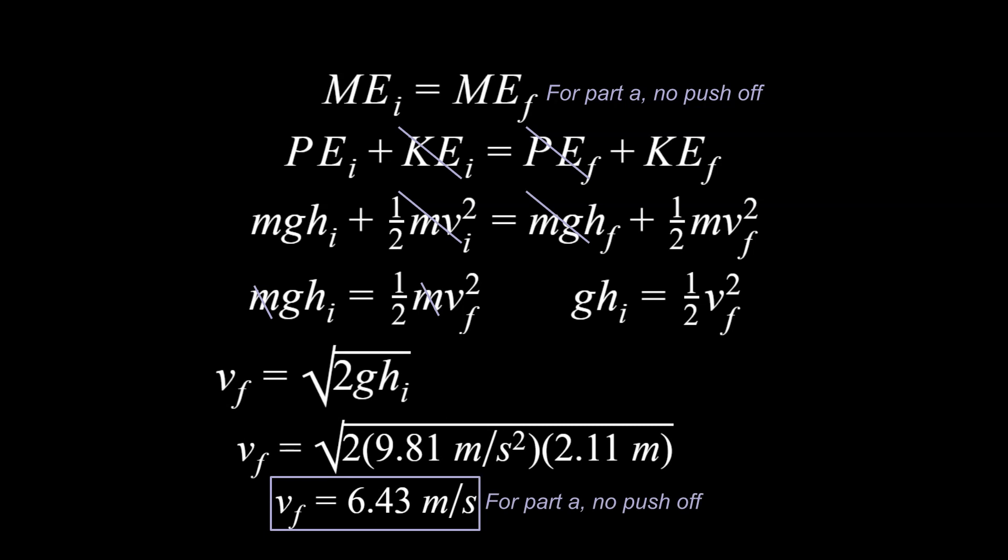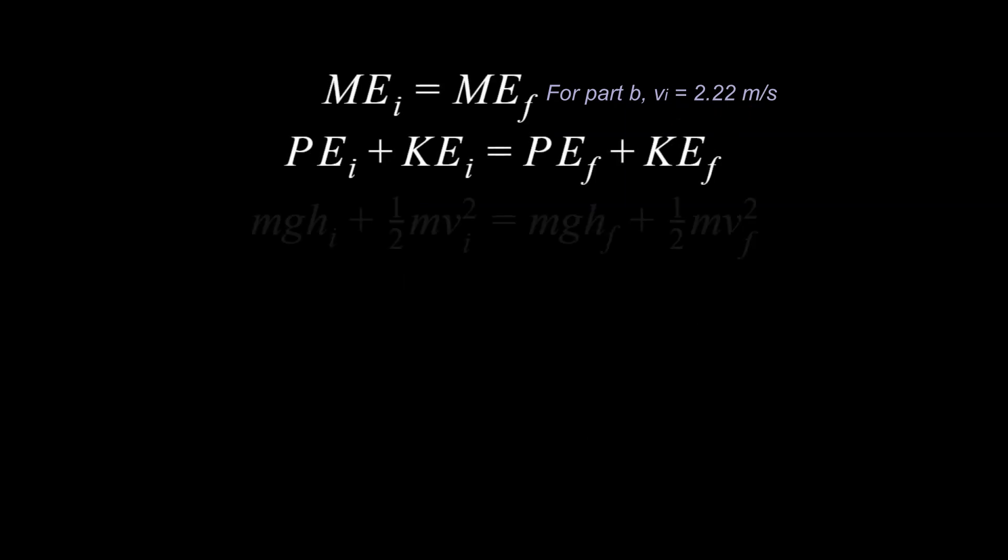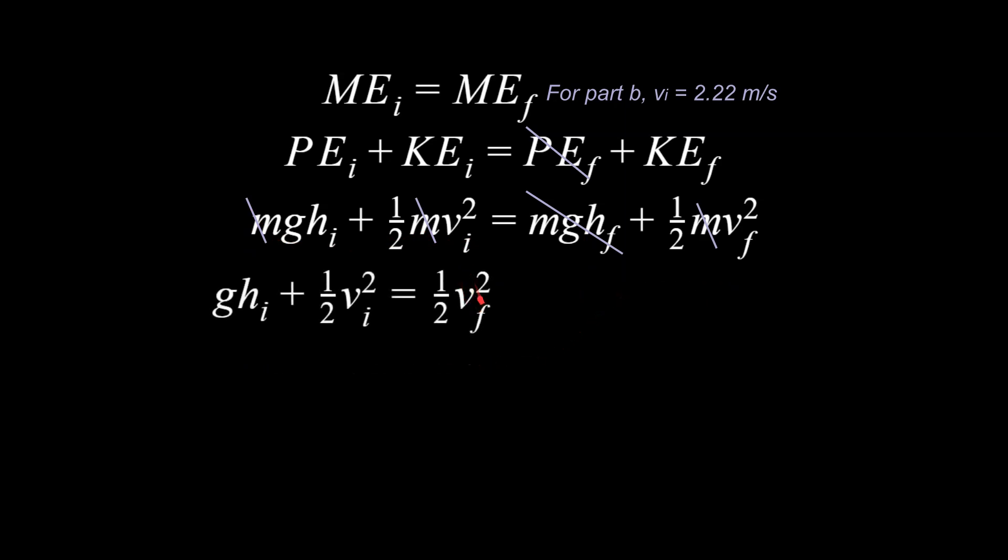Now remember for part b, I said, well, she pushes off with an initial speed of 2.22 meters a second. And so we're going to do almost the same exact thing, except at this stage, this is no longer zero, right? Although our height is still zero at the ends, this is no longer zero, but our masses are. So we can get rid of these masses here, and we can simplify a bit. We are looking for v final.